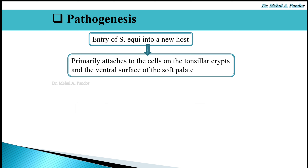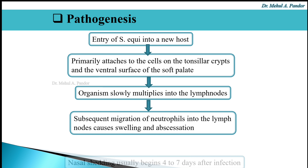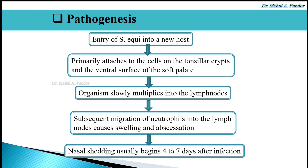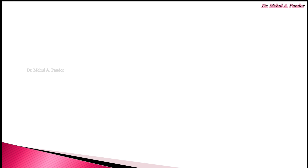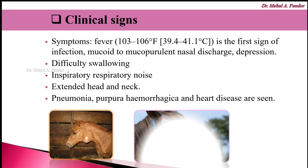Regarding pathogenesis, after the entry of Streptococcus equi into the host, it primarily attaches to the cells on the tonsillar crypts and the ventral surface of the soft palate. The organism then slowly multiplies into the lymph nodes, and subsequent migration of neutrophils takes place into the lymph node, which causes swelling and abscessation. Nasal shedding usually begins four to seven days after infection.